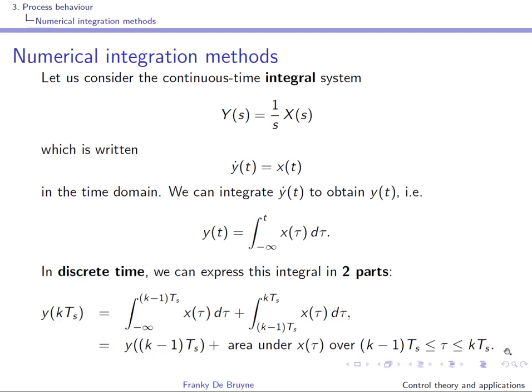In this next subsection, we'll consider numerical integration methods. We know that the relation between the Z domain and the Laplace domain is a specific relation, and what we'll do here is approximate this relation. This will yield an approximate relation between Z and S, allowing us to obtain an approximation of a transfer function in S. To do that, let us consider an integral system.